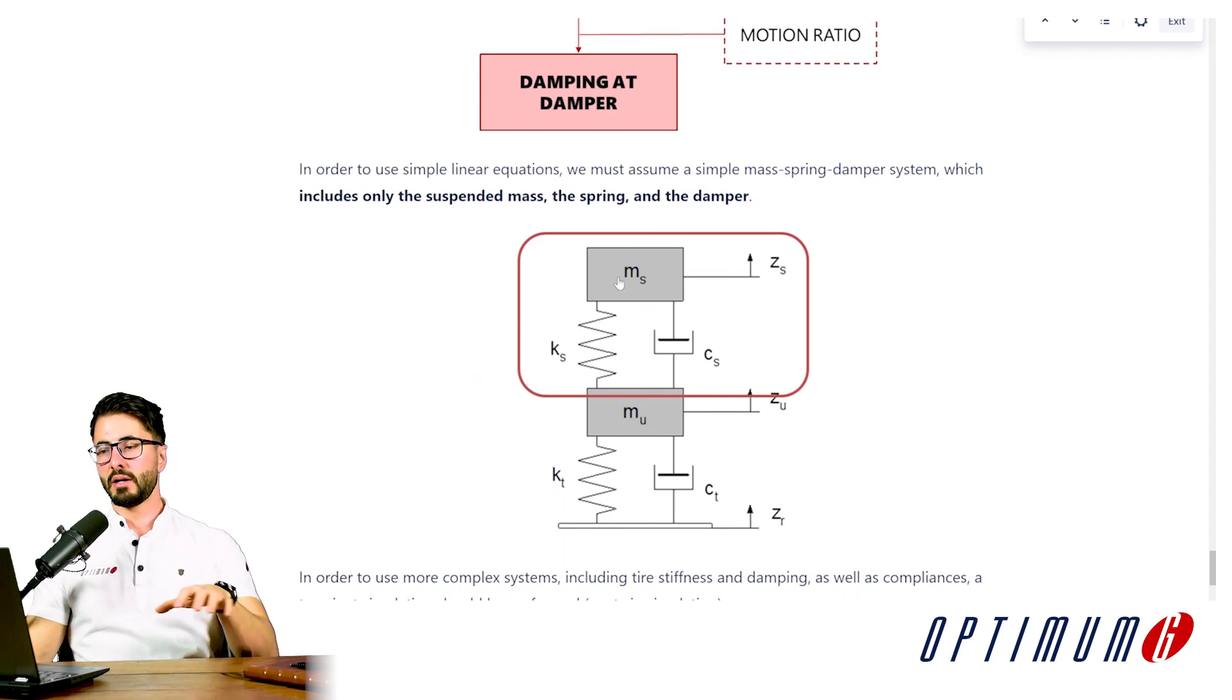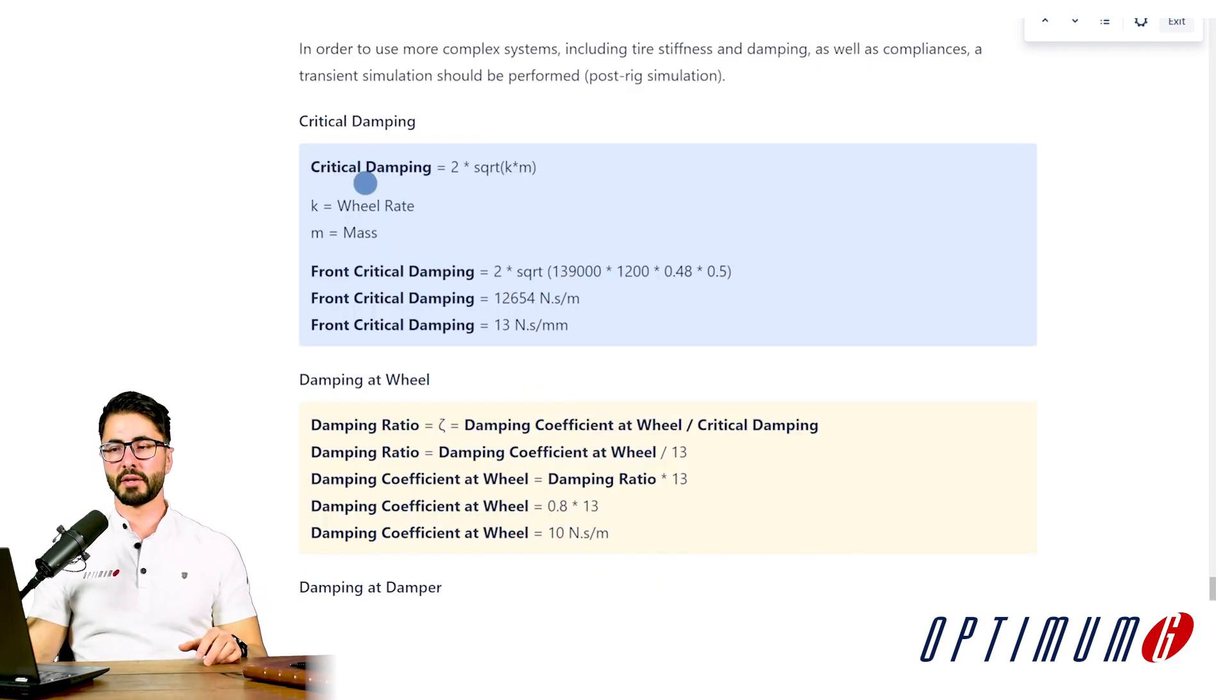So for these calculations, even though we have suspended mass springs and then tire carcass and then tire stiffness, in order to use the simple equations I want to use in this exercise, we have to disregard the tires. So all of the frequencies and damper ratios we are discussing are only on the suspension. If you want to go a little bit more complicated and include tires, then you cannot use linear equations. You would need to, for example, run post-rig simulations. You can do that as a next step.